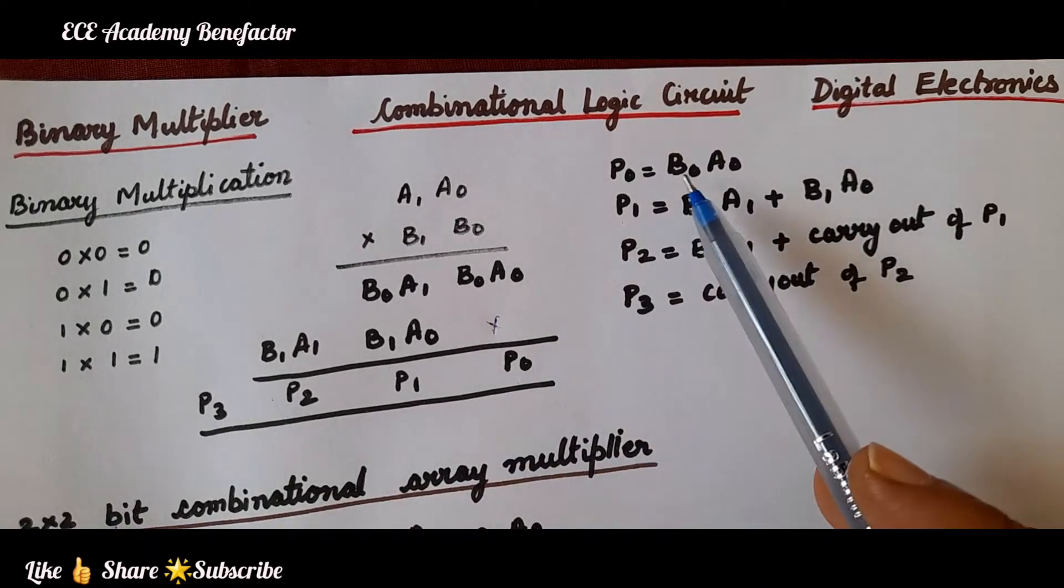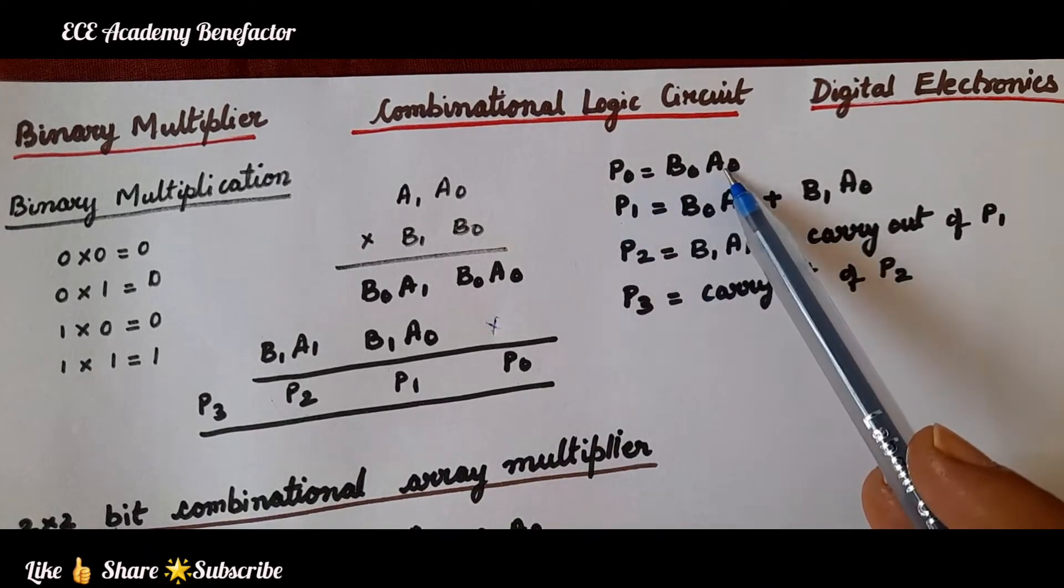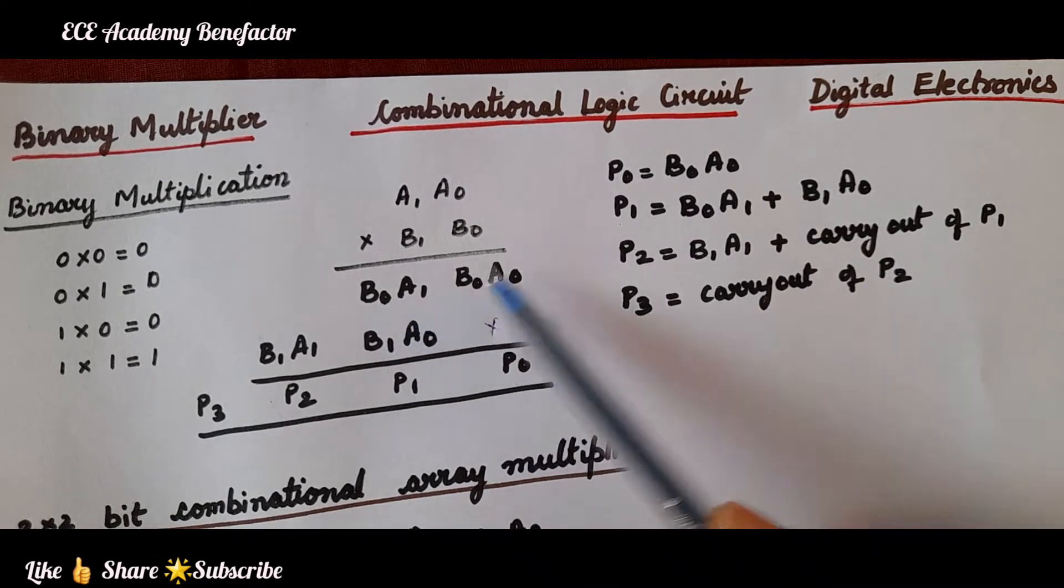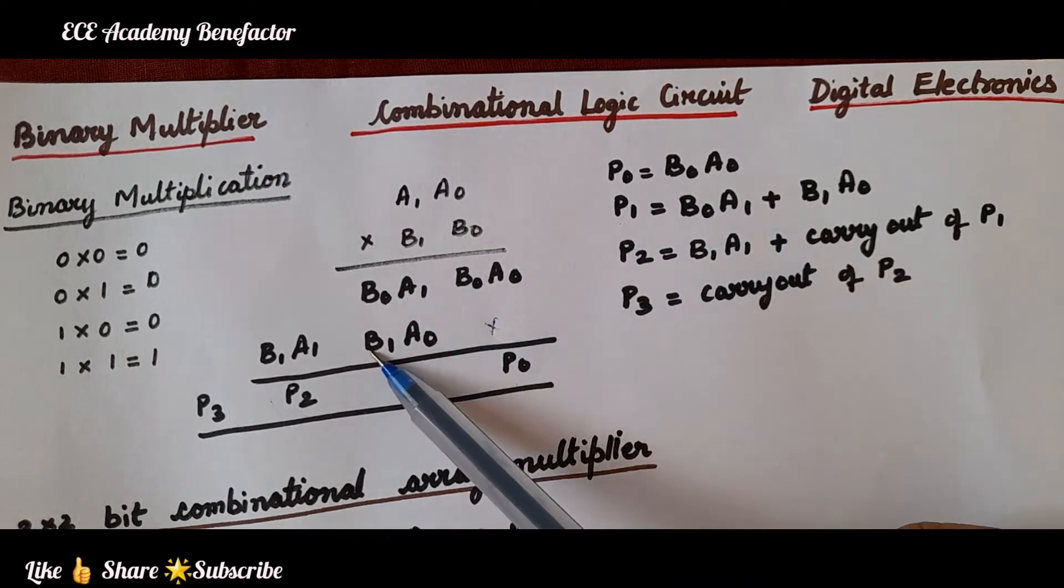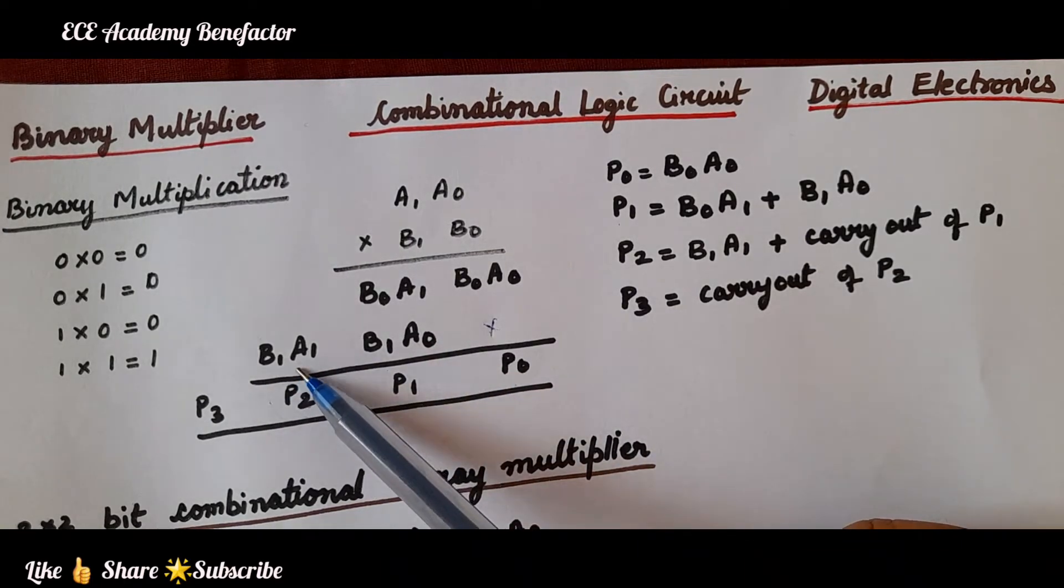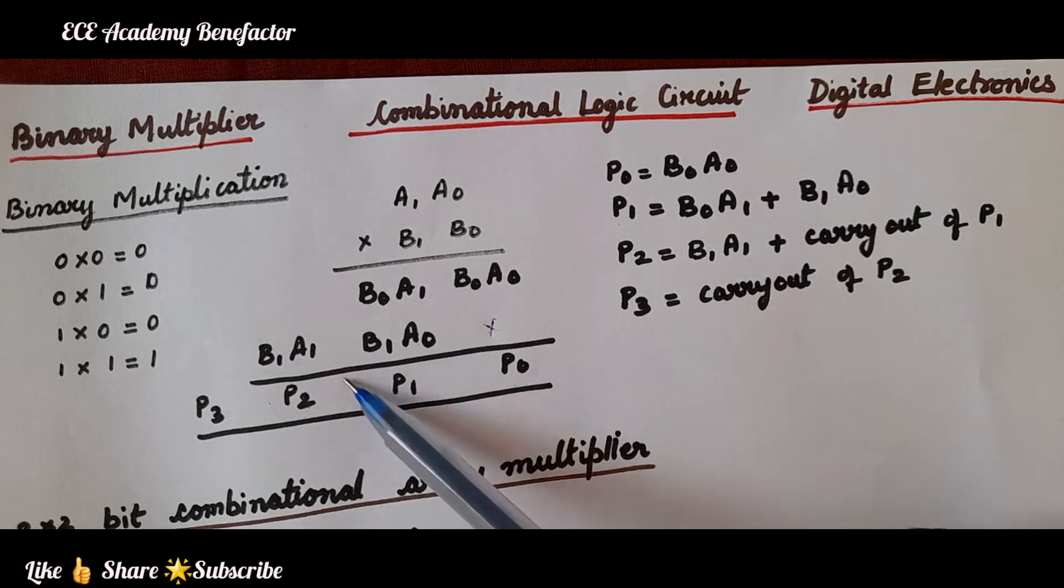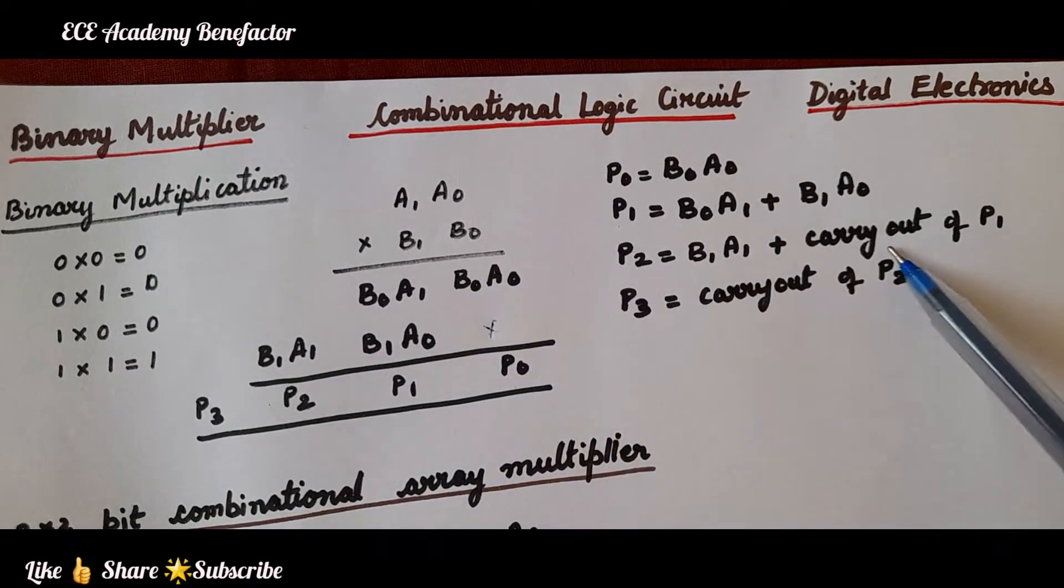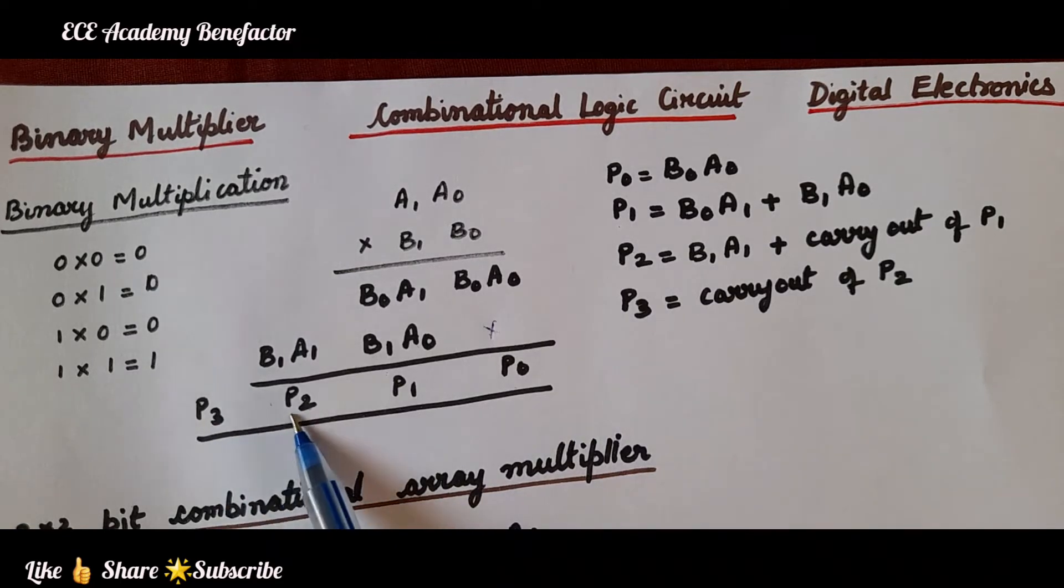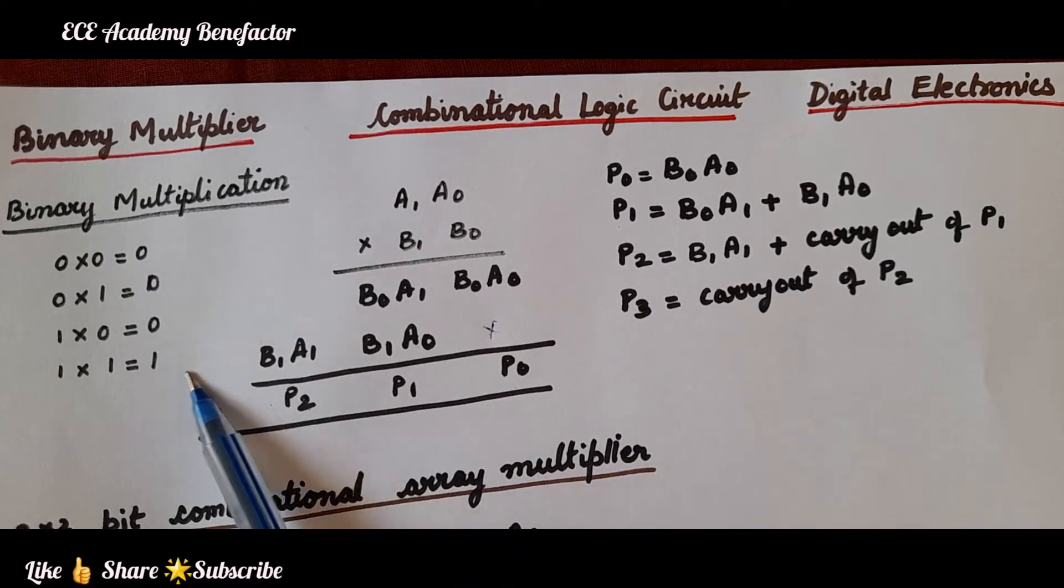What is p0 equation? p0 is b0a0. What is p1 equation? b0a1 plus b1a0. p2 is equal to b1a1 plus the carry of p1, carry out of p1, and p3 is carry out of p2.